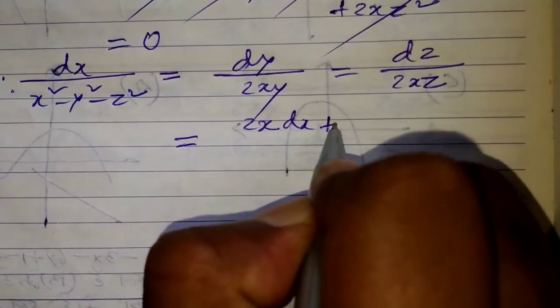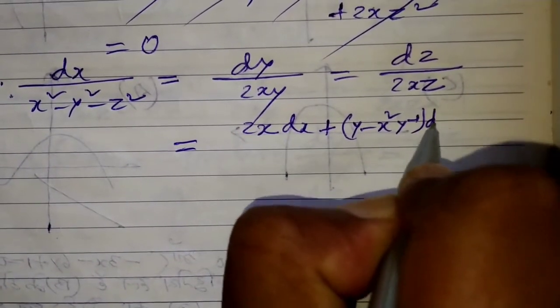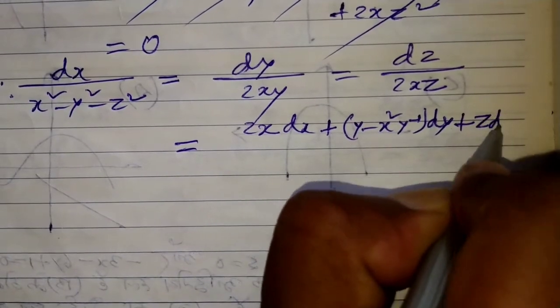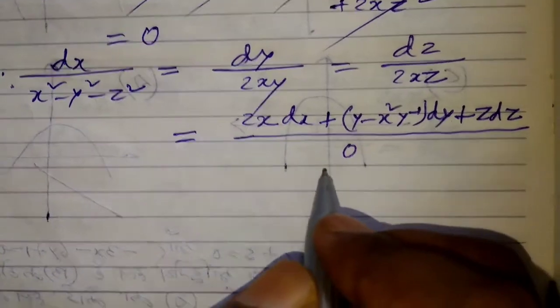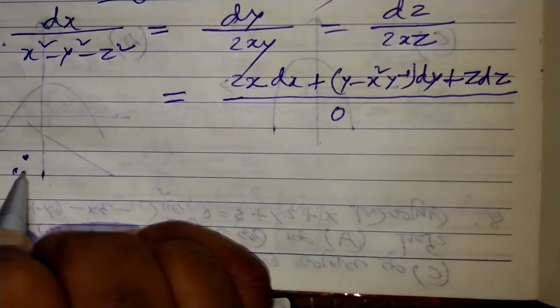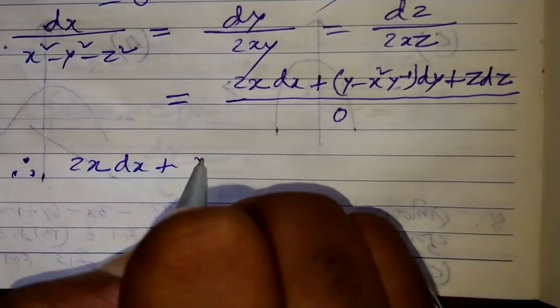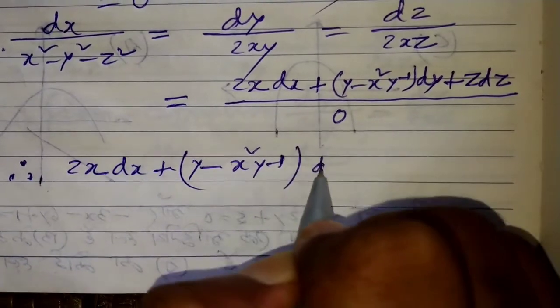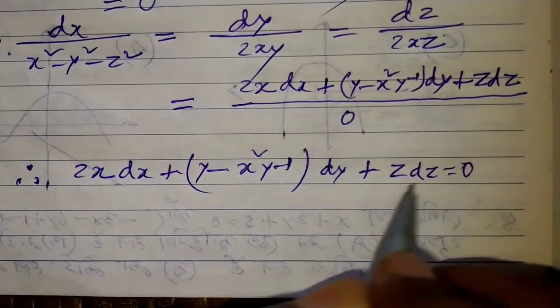(P₁dx + Q₁dy + R₁dz)/0. That is: 2xdx + (y - x²y⁻¹)dy + zdz = 0. On integrating both sides: